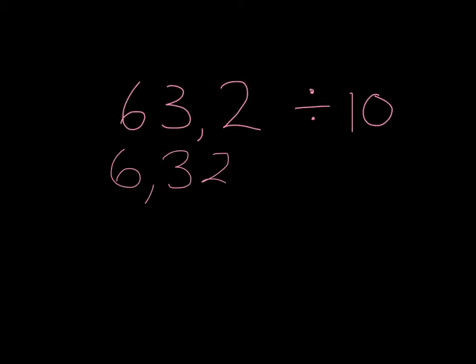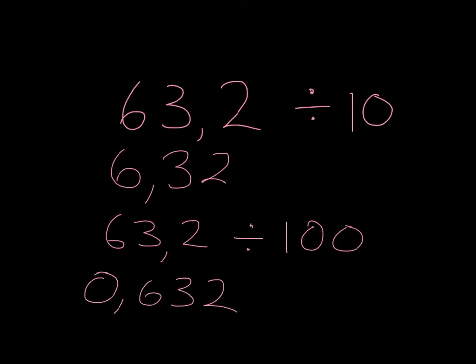If we had to do 63 comma 2 divide by 100, well dividing by 100 is just dividing by 10 and by 10 again. So in other words, what we're going to do is we're going to say because we are doing 2 lots of 10, we must do 2 steps that way and we get 0 comma 6, 3, 2 as our answer.